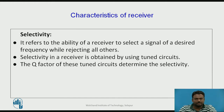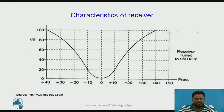Selectivity refers to the ability of the receiver to select a signal of a desired frequency while rejecting all others. Selectivity is obtained by using tuned circuits; the quality factor Q of these tuned circuits determines the selectivity of the receiver. This is the selectivity curve — the receiver is tuned to 950 kHz. The vertical axis represents dB and the horizontal axis represents frequency. A bar is placed at the 3 dB level to identify the selectivity bandwidth of the receiver.